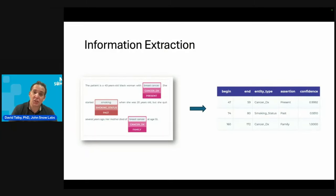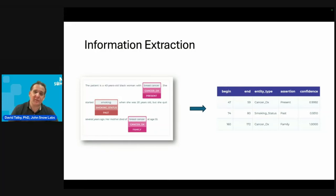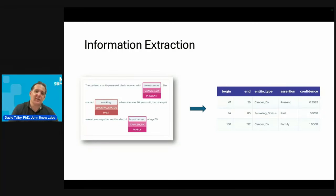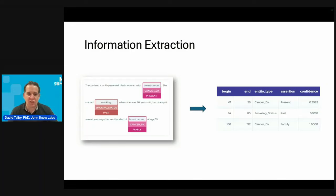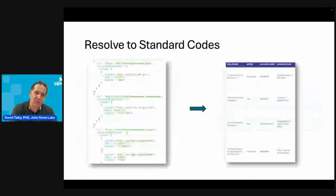We also want to understand relationships — did this happen before or after that? If there's a tumor, where is it — the right lung, the left lung, which part? Which kidney did we operate on? What dosage of this specific medication was provided? So we need to extract semantic relations as well.